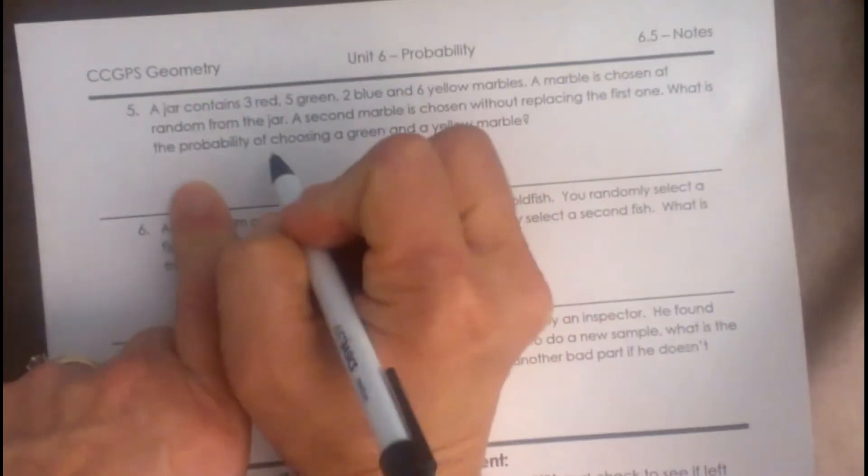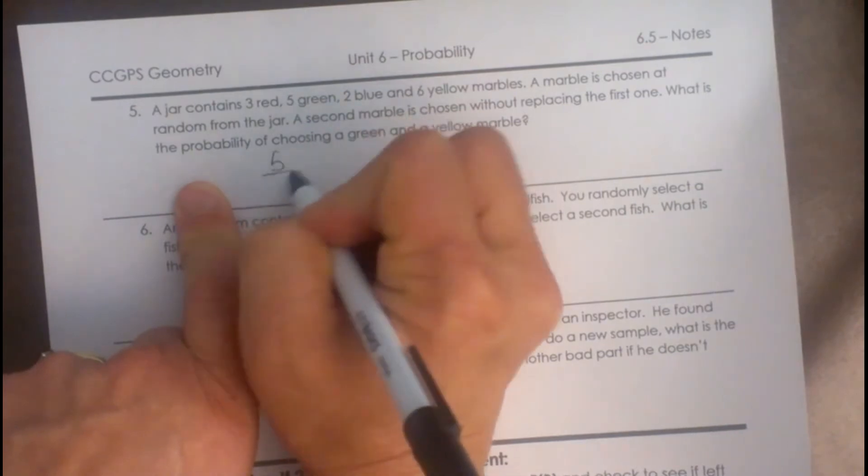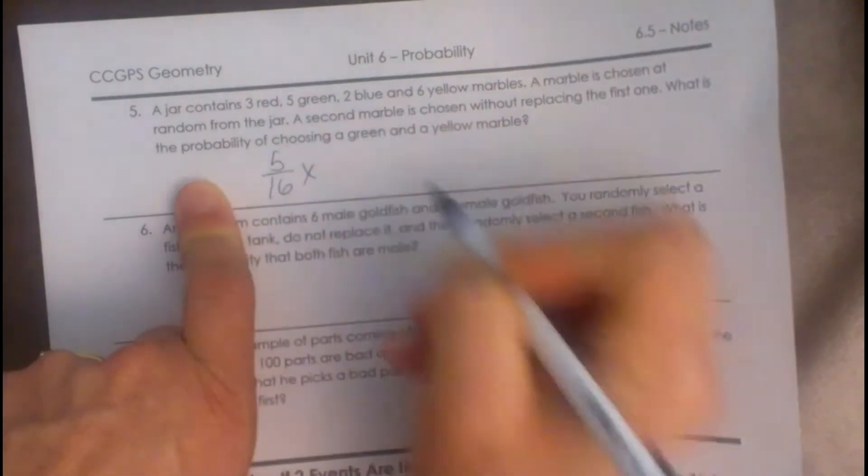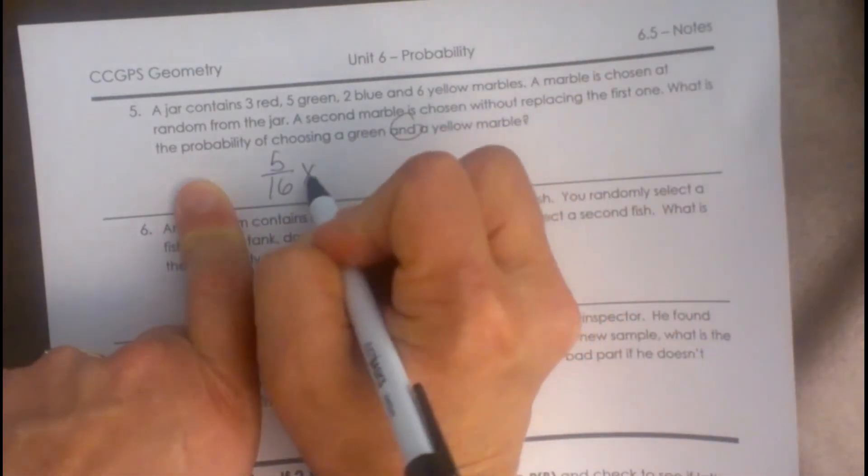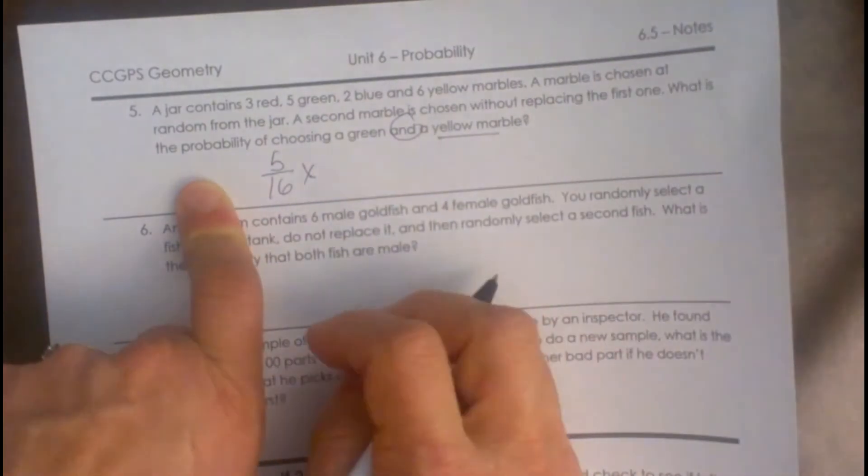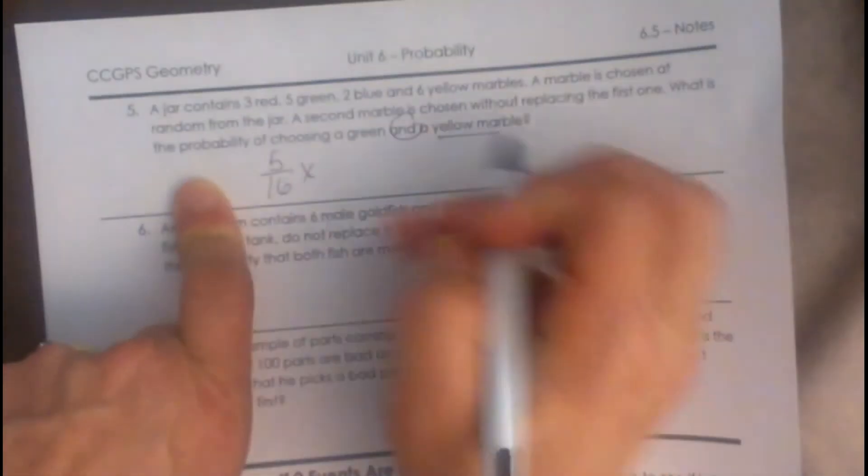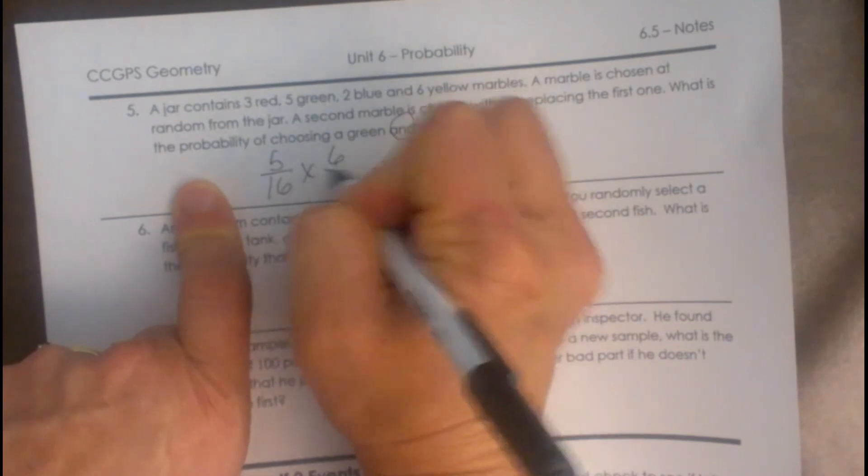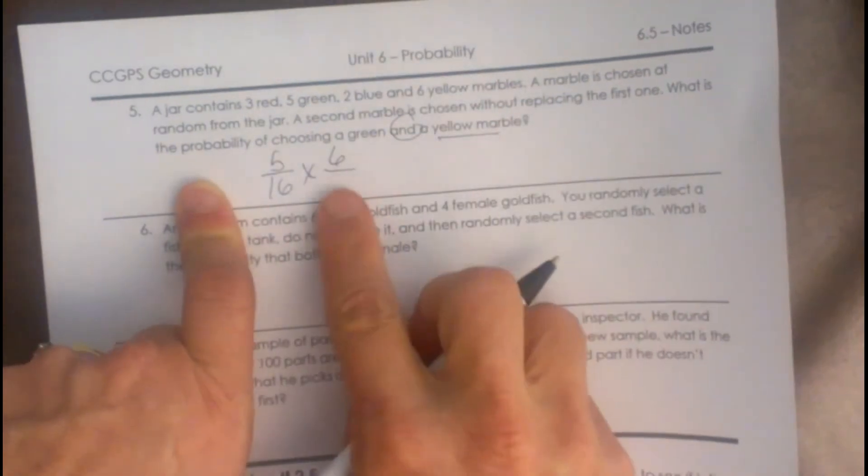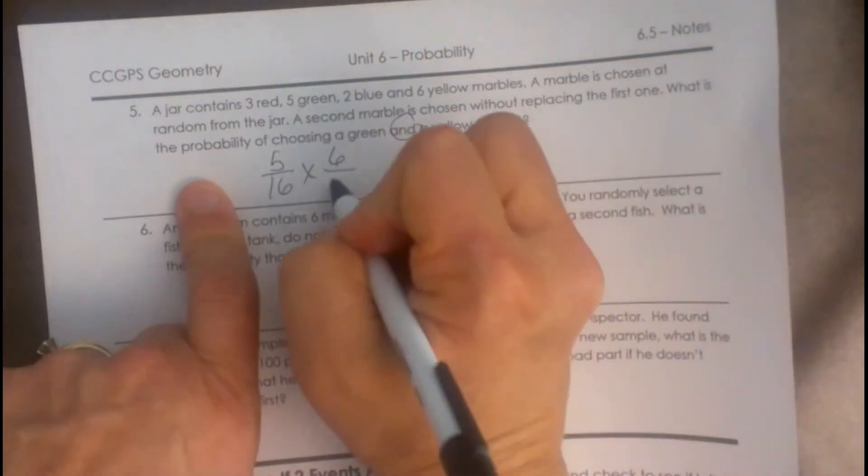What is the probability that you get a green? Well we said that one was 5 out of 16. Now it is an AND problem, so again we multiply. What is the probability of yellow? Well we have 6 yellow choices, but we no longer have 16 marbles, we have 15 marbles.